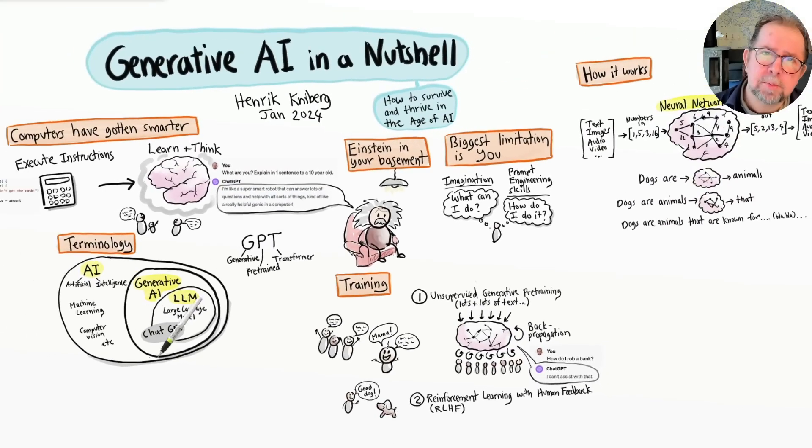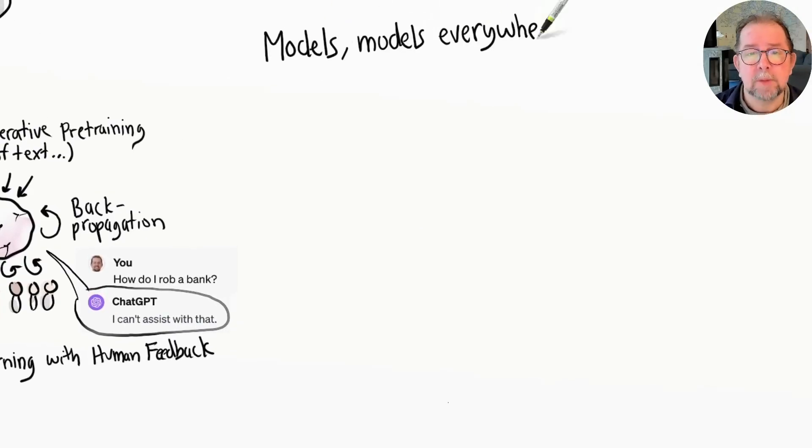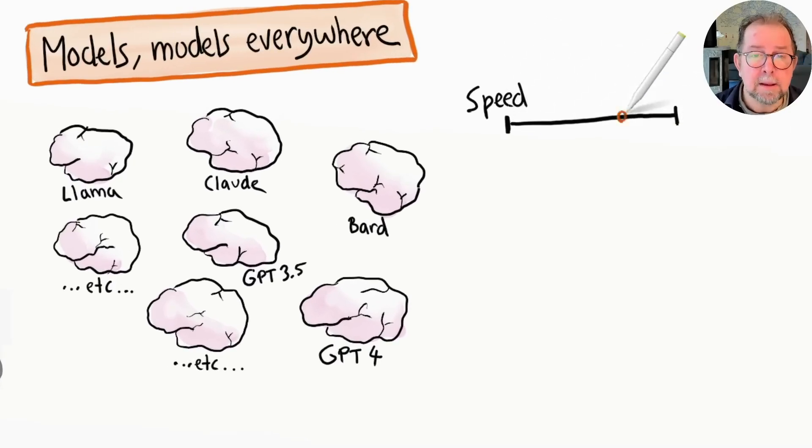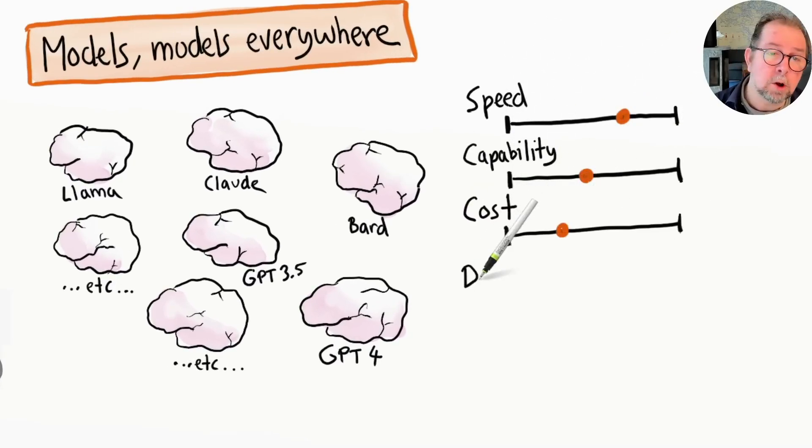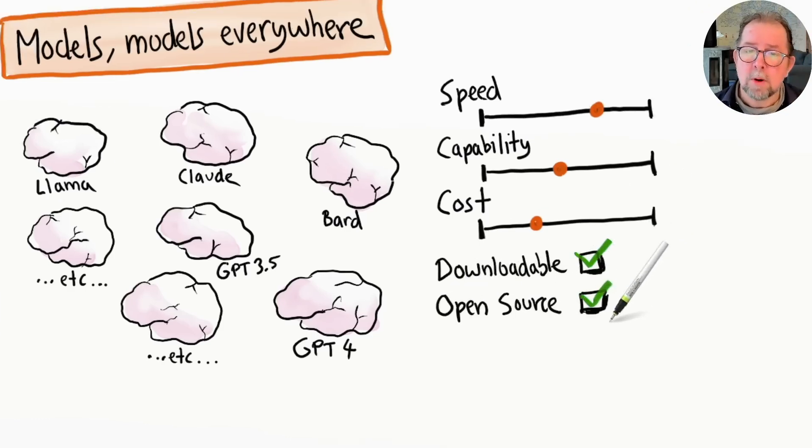Now, although ChatGPT kind of got the ball rolling, GPT isn't the only model out there. In fact, new models are sprouting like mushrooms. They vary a lot in terms of speed, capability, and cost. Some can be downloaded and run locally, others are only online. Some are free or open source, others are commercial products.